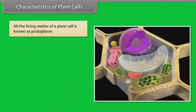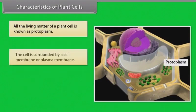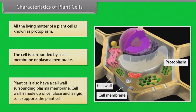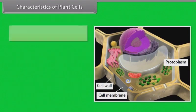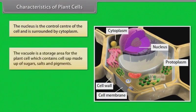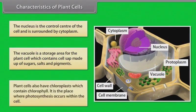Characteristics of plant cells: All the living matter of a plant cell is known as protoplasm. The cell is surrounded by a cell membrane or plasma membrane. Plant cells also have a cell wall surrounding the plasma membrane, which is made up of cellulose and is rigid, so it supports the plant cell. The nucleus is the control center of the cell and is surrounded by cytoplasm. The vacuole stores cell sap made up of sugars, salts and pigments. Plant cells also have chloroplasts which contain chlorophyll — the site where photosynthesis occurs.